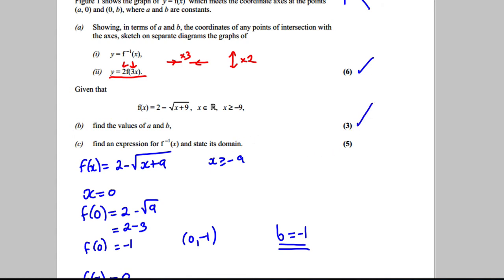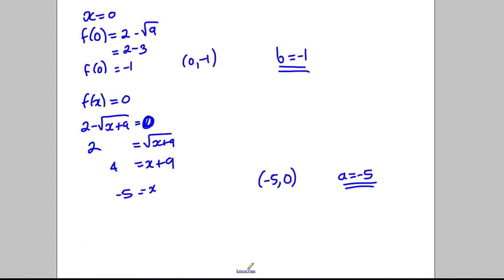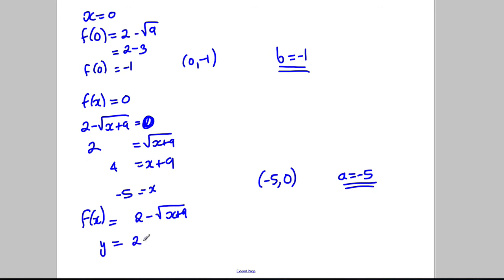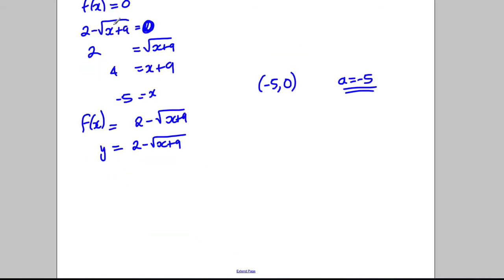For three marks, find an expression for the inverse and state its domain. The key thing here is that the domain of the inverse is going to be the range of the original function. So firstly, let's write down the original function: f(x) = 2 − √(x + 9). I'm going to write y = 2 − √(x + 9) and swap the roles of x and y.